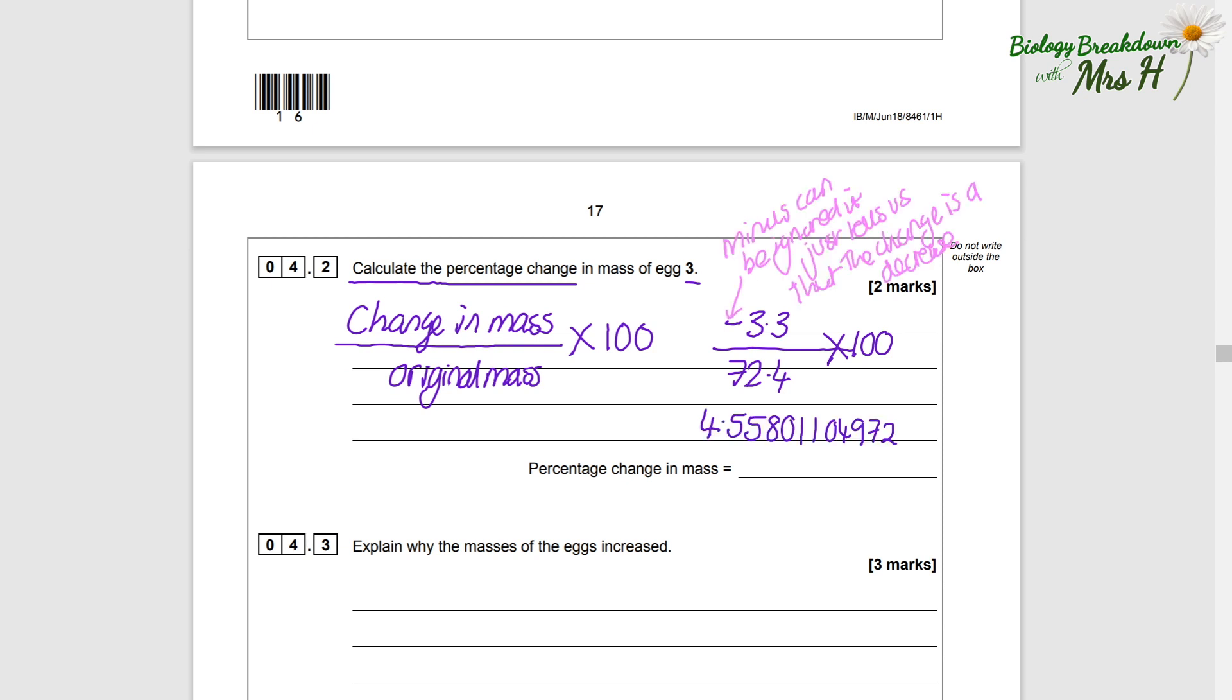We can ignore the negative sign, we know it's a decrease in mass. So we'll just get our answer which is 4.558 or 4.56 or 4.6, because you get a long number you do have to round it up. And for this question the examiner hasn't said how many significant figures to round it up to or decimal places, so that's why for this question they will accept three possible answers.